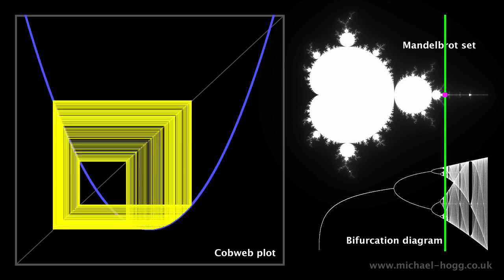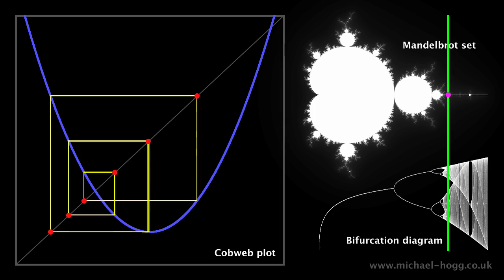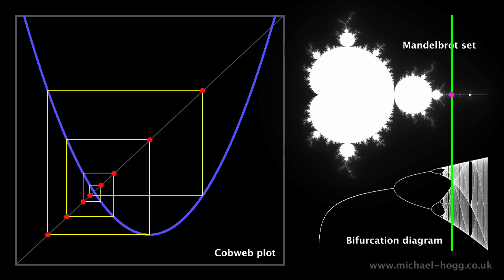Occasionally, the plot will become orderly again for a moment, whenever the pink dot passes over a baby Mandelbrot set, but it'll quickly return to the chaotic behavior.